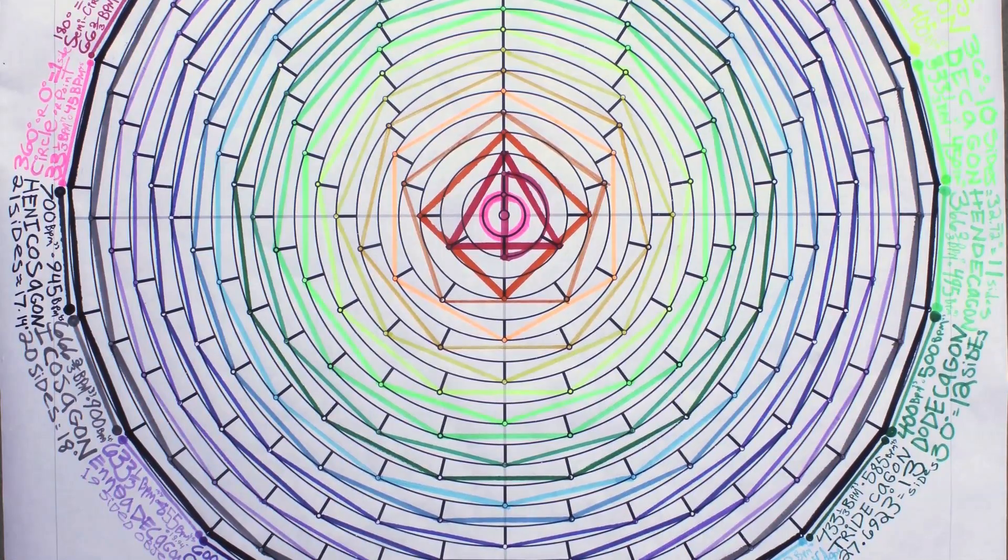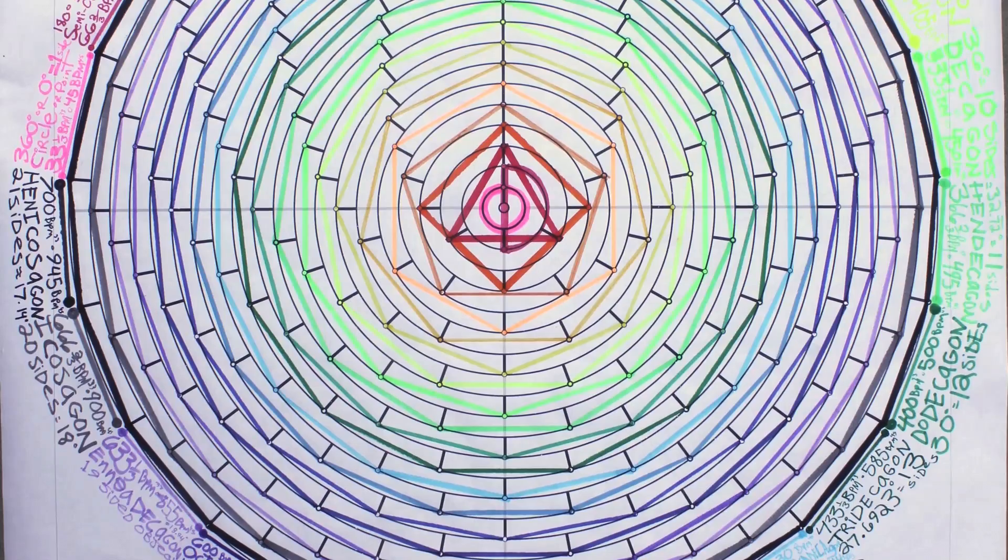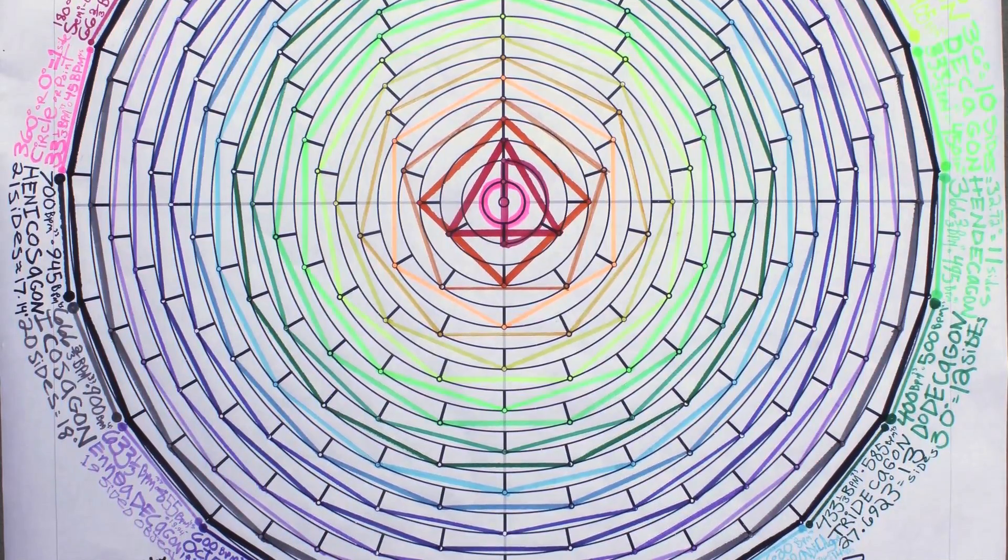15 Pentadecagon equals 675 BPM at 45, equals 500 BPM at 33.3.